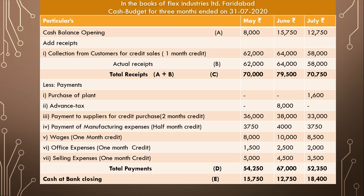The closing balance of May becomes the opening balance of June — 15,750. Adding all receipts gives 79,500; total payments are 67,000, leaving a closing balance of 12,750 for June. This becomes the opening balance of July. Similarly, the closing balance of July is calculated as 18,400. This completes example three on cash budget for Flex Industries Limited.